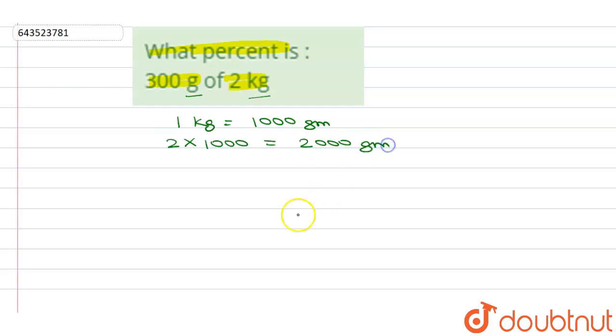Now for solving this question, first we'll find 300 is how much part of 2000, then we will convert it into a percentage. And we know that for converting any value to percentage, we have to multiply that with 100.